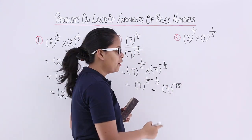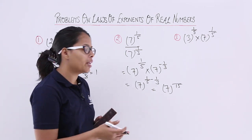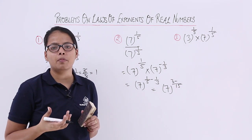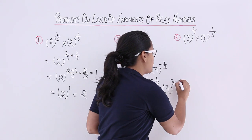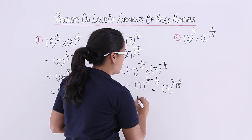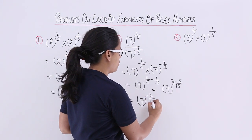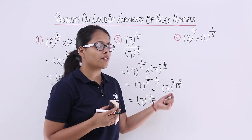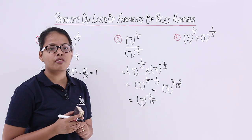The LCM of 5 and 3 is 15. Dividing 15 by 5 gives 3, so 3 into 1 is 3. Dividing 15 by 3 gives 5, so 5 into 1 is 5. The final result will be 7 raised to power 3 minus 5 over 15, which is minus 2 by 15. Since 5 is greater than 3, the negative sign carries through, giving a final result of 7 raised to power minus 2 by 15.